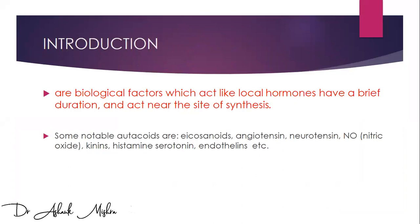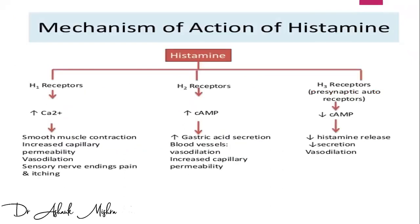A few autocoids are eicosanoids, angiotensin, neurotensin, nitric oxide, kinins, histamine, serotonins, and endothelins. We will discuss about histamine, being one of the most popular autocoids and one of the most important examples of a vasoactive amine.